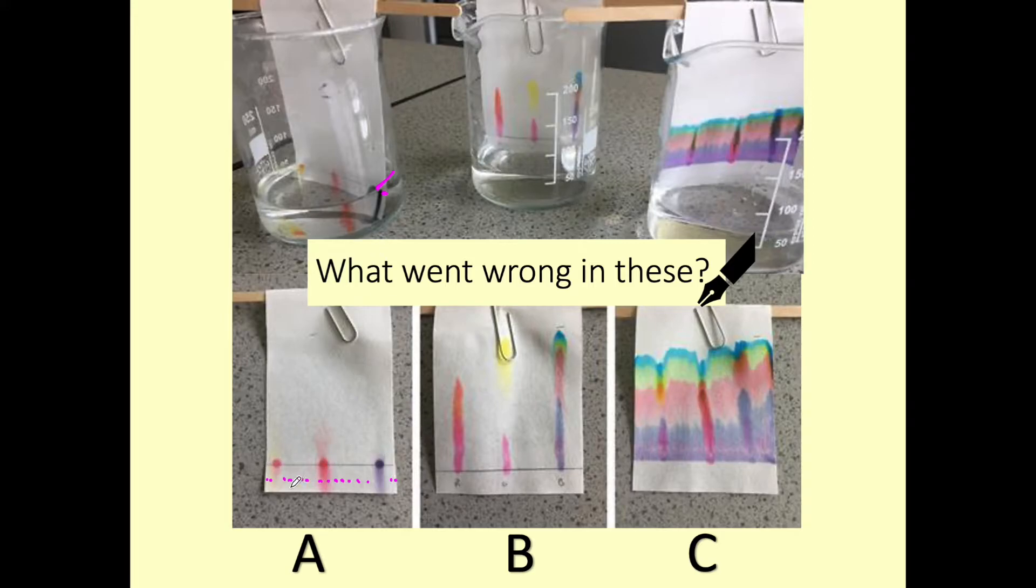So we should always make sure that our water level is below where we put our substances on the line. It's important that we measure that out and it's important that our starting line is sufficiently high so that the water can touch the paper so that it can travel up the page.